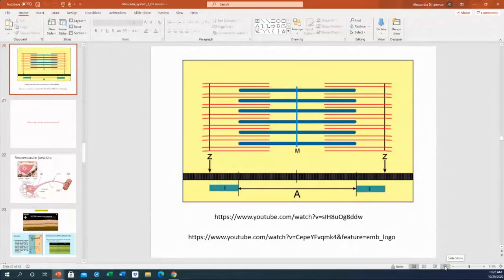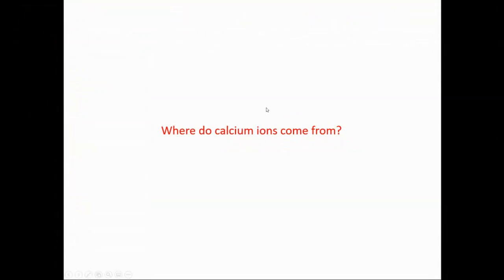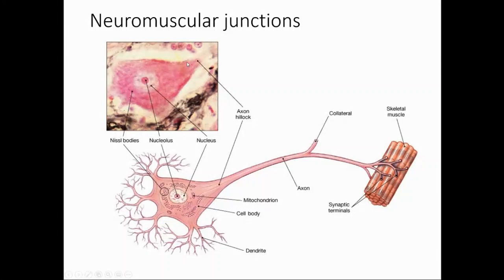Calcium is the main deliverer of the contraction process. The question now is where calcium ions come from and where is this calcium eventually stored, because in a process like this, calcium has to be readily available.